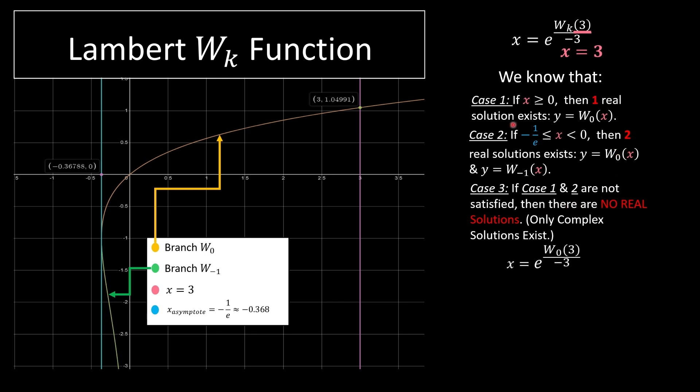So basically, in our scenario, it's case 1. So basically we write W_0 and replace the 1.0499 which is from the graph. We solve for it and that's our answer to this question.